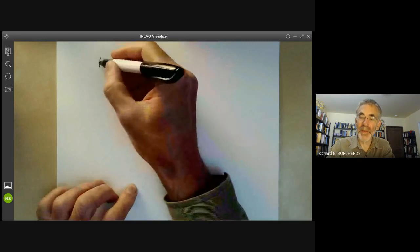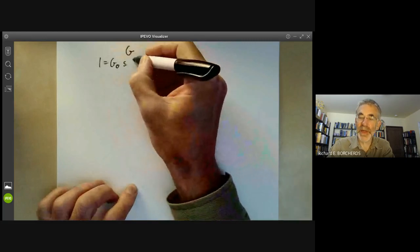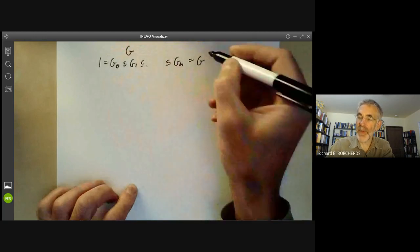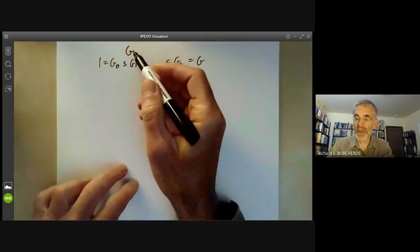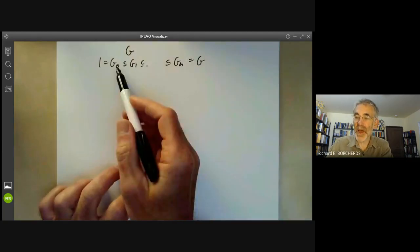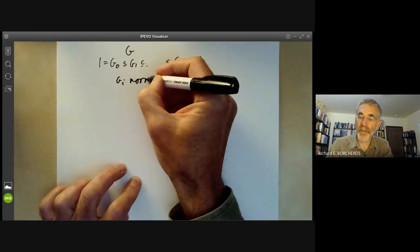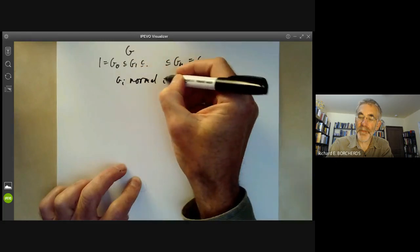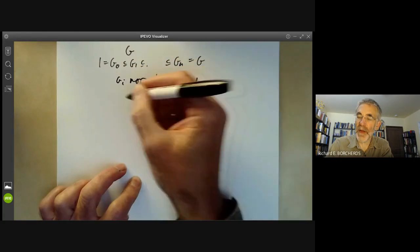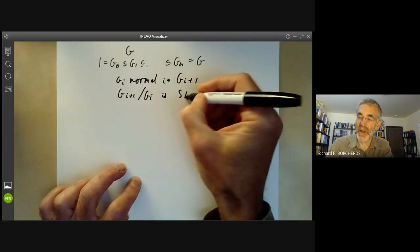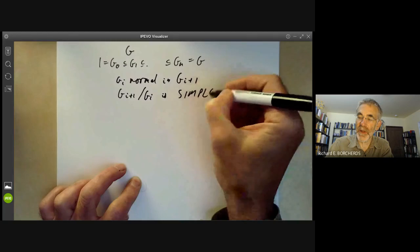One is equal to G0 contained in G1 up to contained in Gn. I should say I'm considering all groups to be finite in this lecture, such that Gi is normal in Gi plus one and Gi plus one over Gi is simple, meaning it's got no normal subgroups other than the whole group in itself.